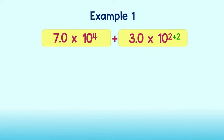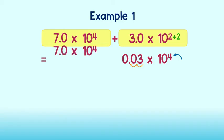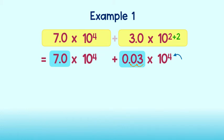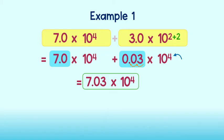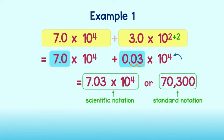Let's go ahead and add two powers of 10 in the second expression. This will become 10 to the fourth power. Since the power of 10 got larger by 2 powers of 10, I must make the first factor in the expression smaller by 2 powers of 10. I can easily do this by moving the decimal point two places to the left. Now I add the first factors: 7 plus 3 hundredths equals 7 and 3 hundredths. And then I will keep the common power of 10, or 10 to the fourth. Our answer is 7.03 times 10 to the fourth power, or 70,300 in standard notation.